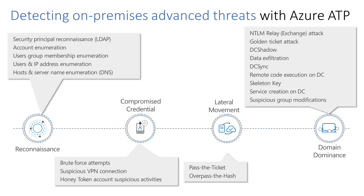So let's dive into this. When an attacker is moving laterally throughout the organization, you'll need to detect what they're doing at really any stage of the kill chain. Azure ATP has a large range of detections that follow across this kill chain. Starting on the far left with Reconnaissance, this includes LDAP Recon, which attackers use to gain critical information about the domain environment, map the domain structure, and identify privileged accounts. That detection is triggered based on computers performing a suspicious LDAP enumeration query, or queries targeting sensitive security groups.